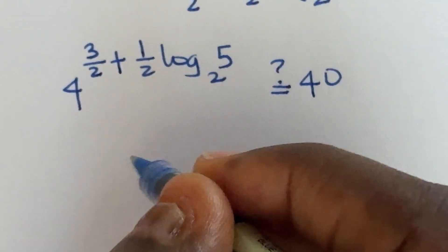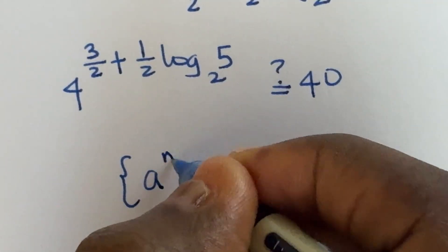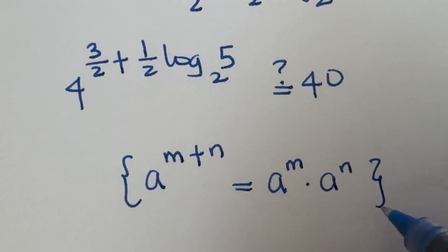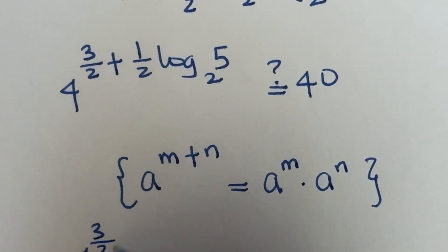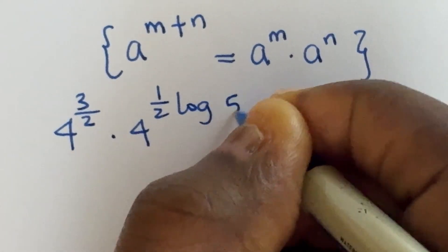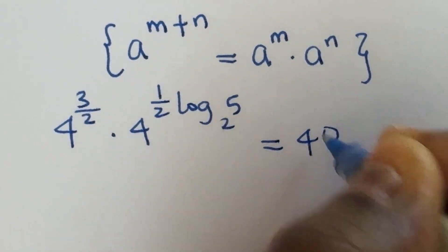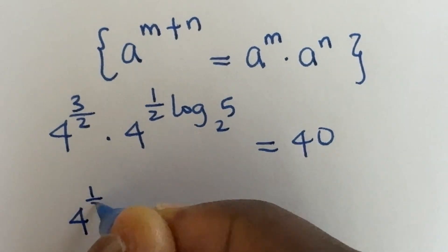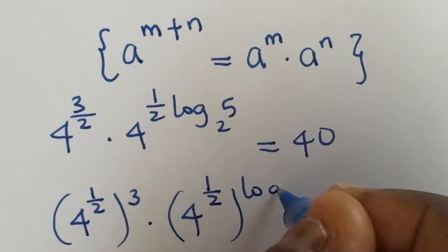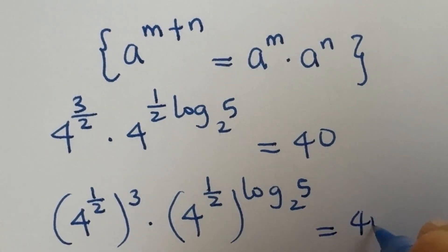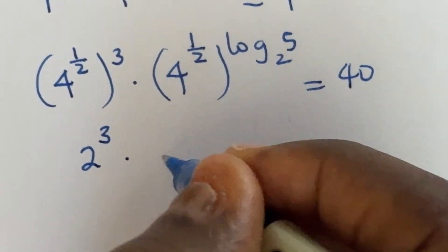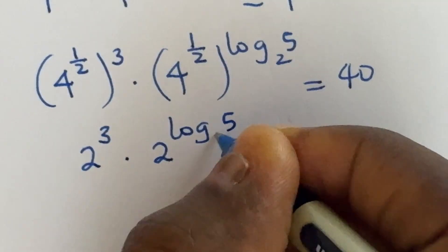Let us apply indices here to this power. The law we are applying says when you have a raised to power m plus n, you can express this as a raised to power m times a raised to power n, giving us 4 raised to power 3 over 2, times 4 raised to power 1 over 2 log 5 base 2, equal to 40. So this is 4 raised to power 1 over 2, raised to power 3; and this is 4 raised to power 1 over 2, raised to power log 5 base 2, equal to 40.